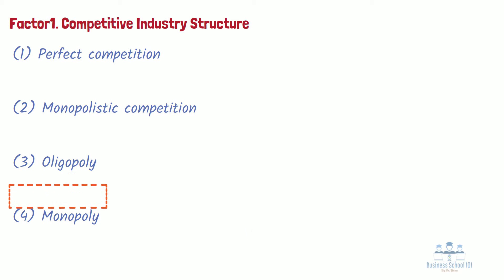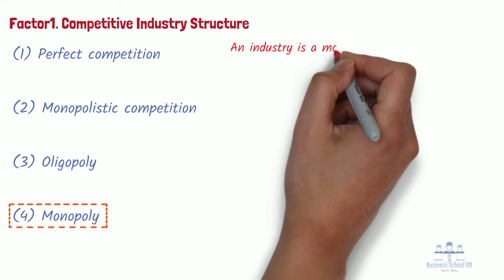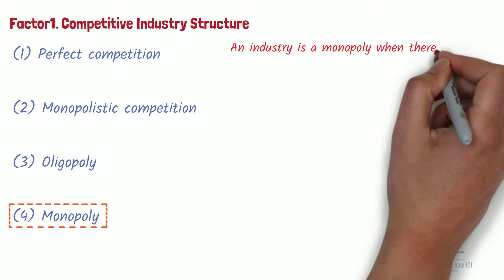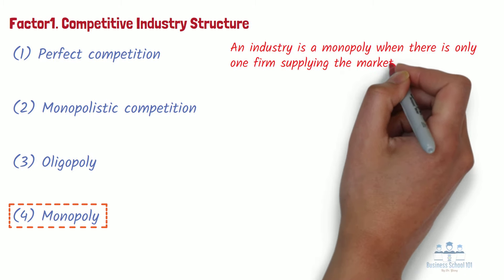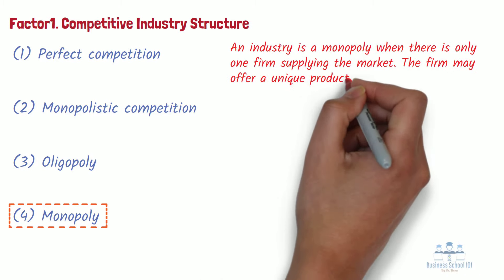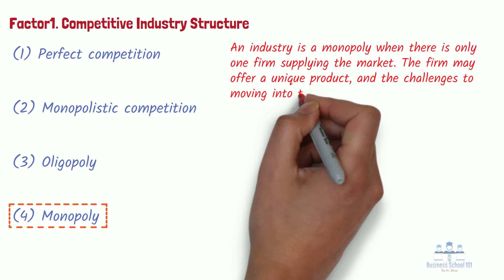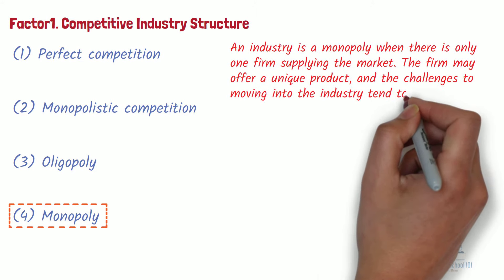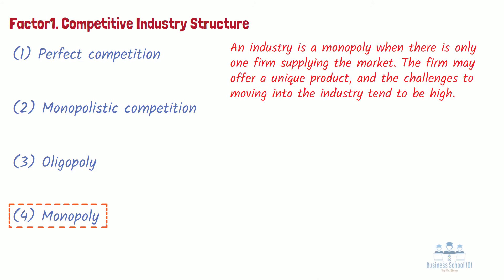Monopoly — an industry is a monopoly when there is only one firm supplying the market. The firm may offer a unique product and the challenges to moving into the industry tend to be high. The monopolist has considerable pricing power; as a consequence, firm and thus industry profit tends to be high.